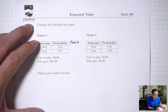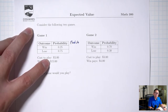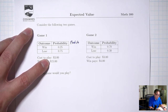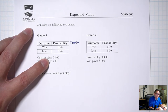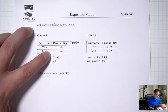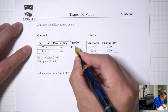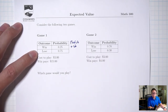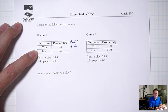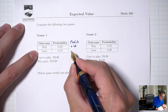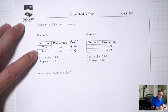For game one, if you win, you win $15, but keep in mind that you paid $3 to play already. So you actually profit $15 minus $3, which is $12. If you lose, you get nothing, so you lost the $3 that you paid to play — that's negative three.